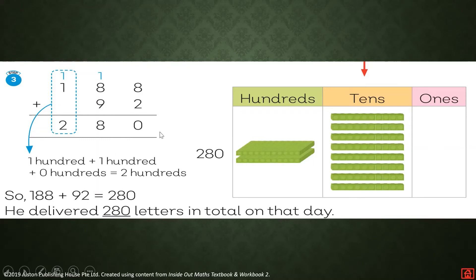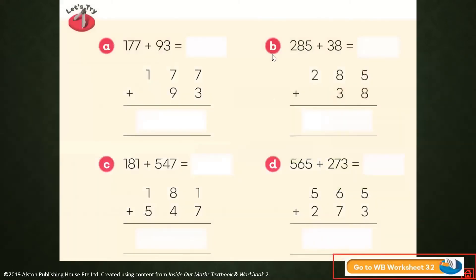This is how we group the numbers from ones, tens, and hundreds. Let's try if you understand our lesson. Letter A: 177 plus 93. 7 plus 3 equals 10, carry 1. 1 plus 7 plus 9 equals 17, carry 1. 1 plus 1 equals 2. The answer is 270.